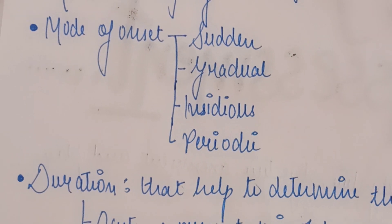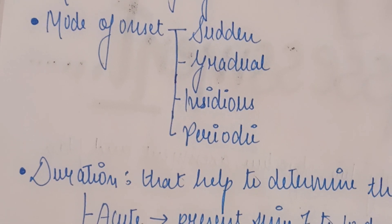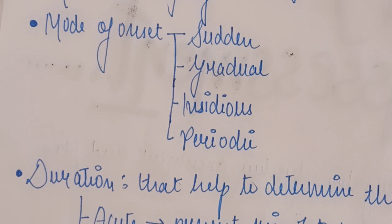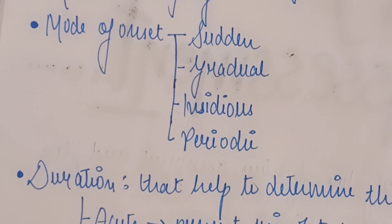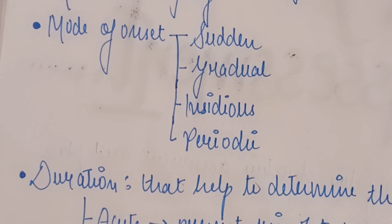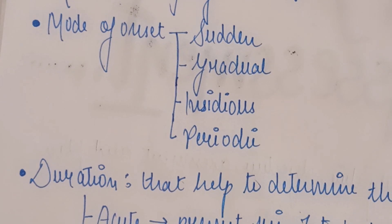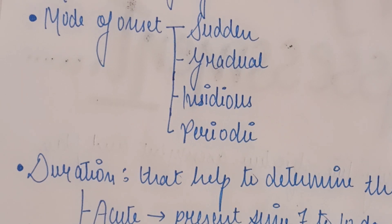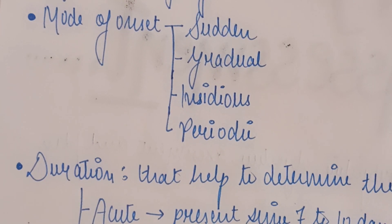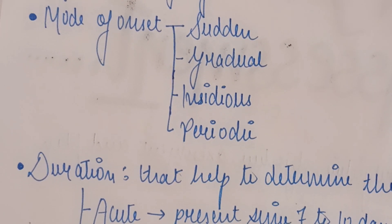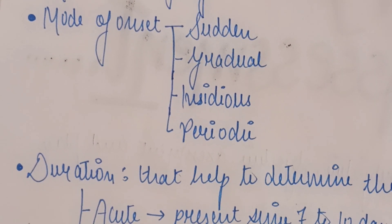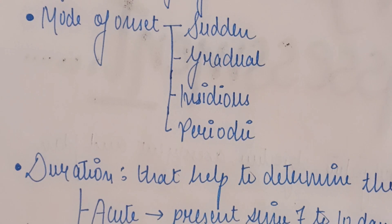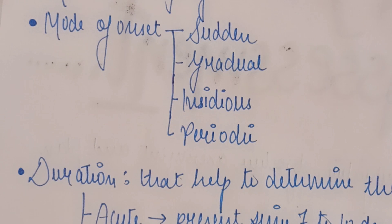The mode of onset tells us how the symptoms appeared. For example, with low back pain since 5 days — was the onset sudden, or was it gradual, increasing day by day? Insidious means there are no symptoms initially and then symptoms appear gradually. Periodic means the pain occurs at certain times, like at night or in the morning. So the mode of onset can be sudden, gradual, insidious, or periodic.